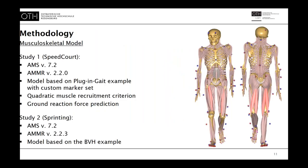For the calculation of our models, we used the AnyBody Modeling System version 7.2 with AMMR 2.2. The first study used AMMR 2.2.0 and the second study AMMR 2.2.3. The first study was based on the plug-in gait example from the AMMR with a custom marker set — we added markers to the legs and feet to avoid information loss in the highly dynamic motion. For the simulation we used the quadratic muscle recruitment criterion and ground reaction force prediction. The second study was based on the BVH example from the AMMR since the recording technique was different, but was otherwise identical to the first study model.